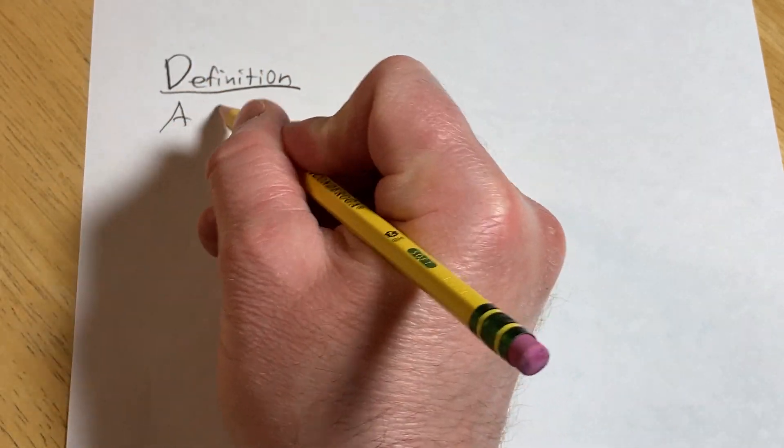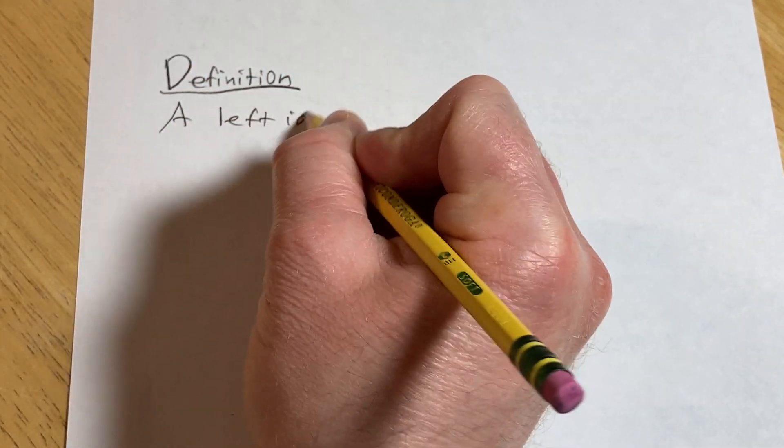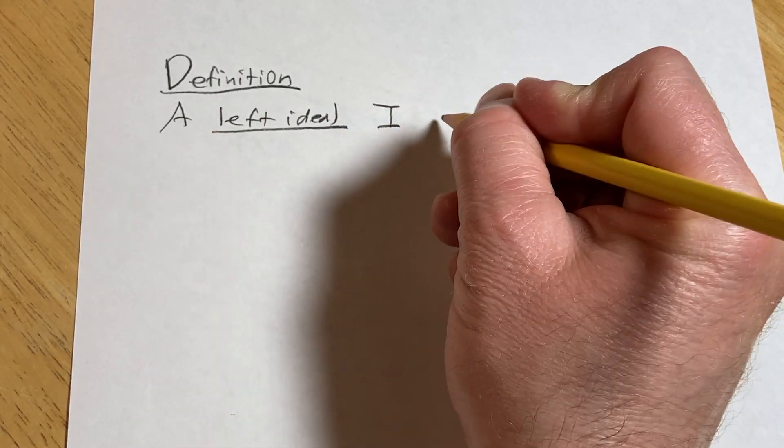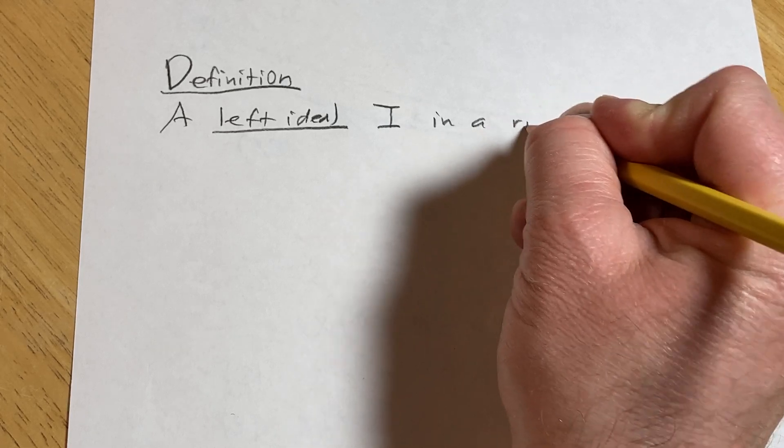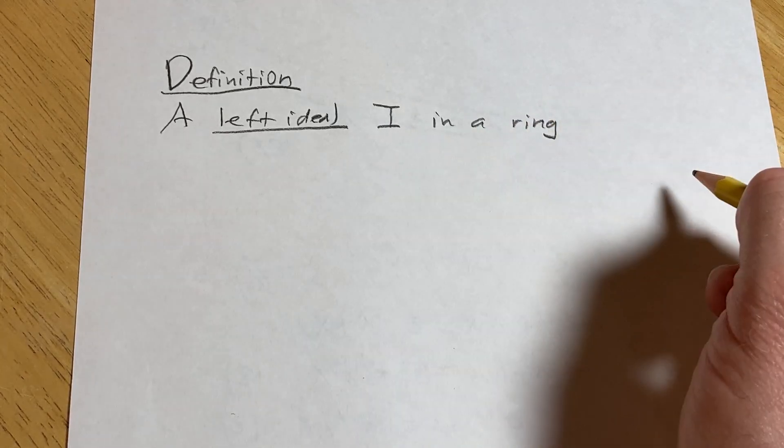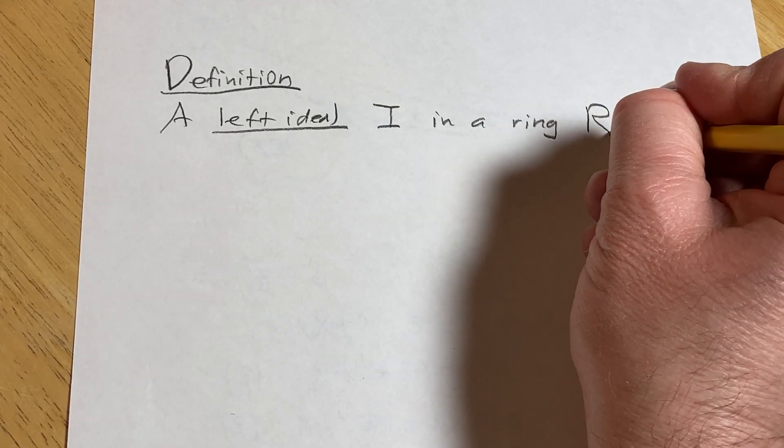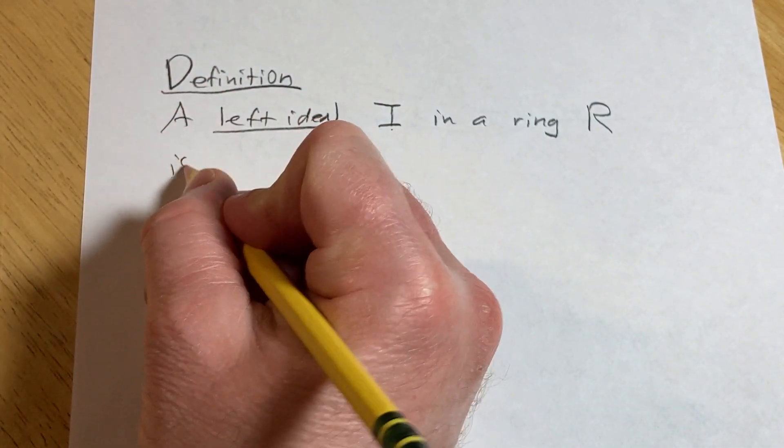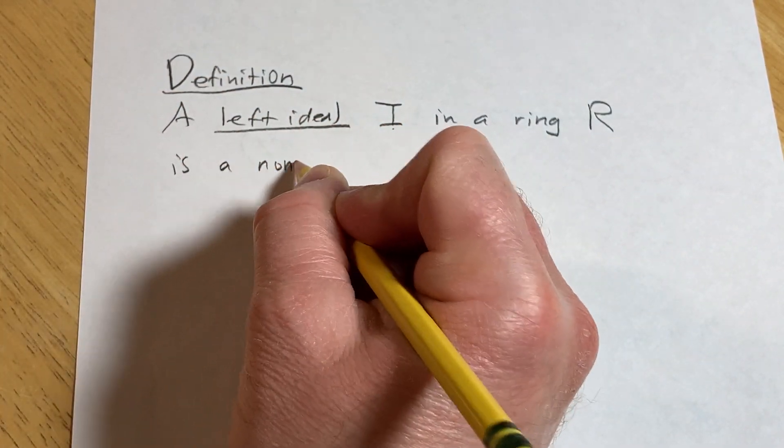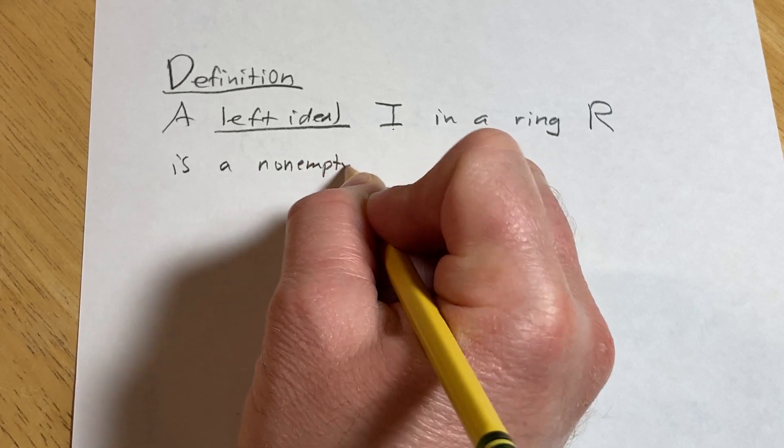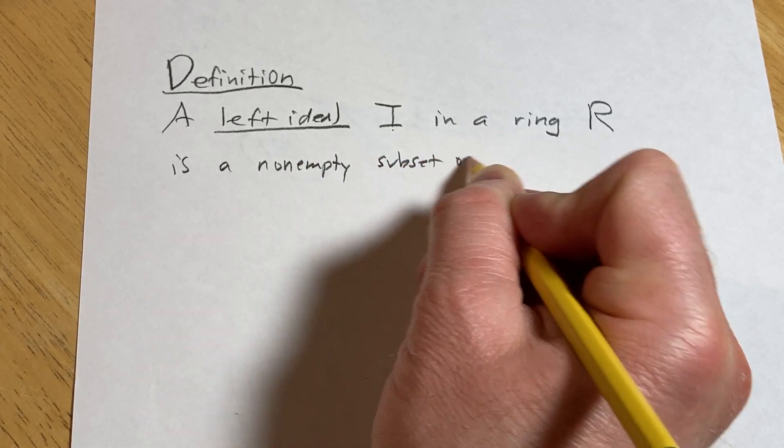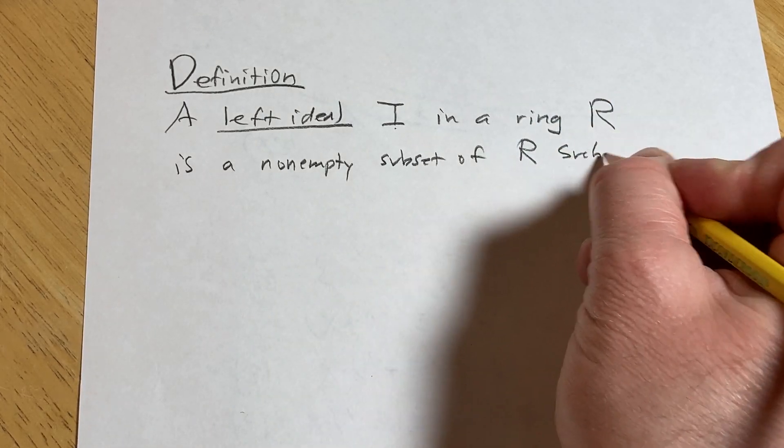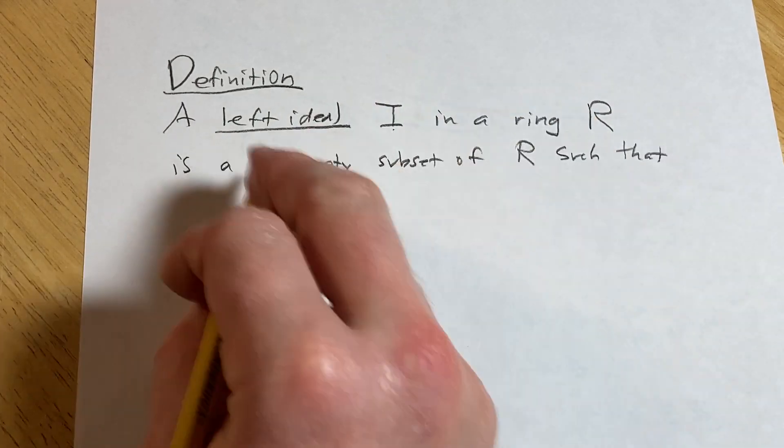A left ideal I in a ring R is a non-empty subset of R such that we have the following conditions.